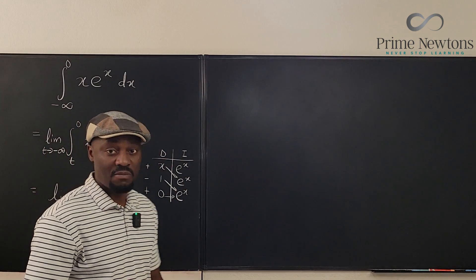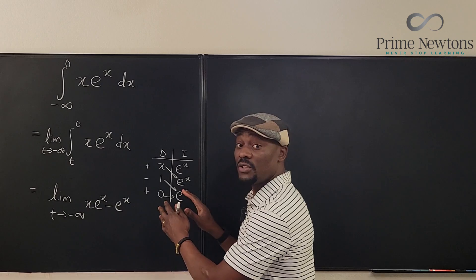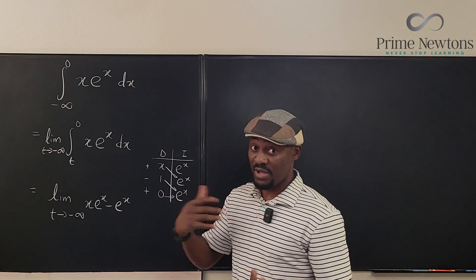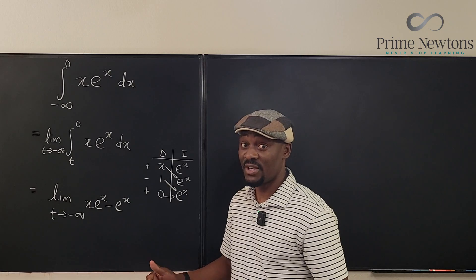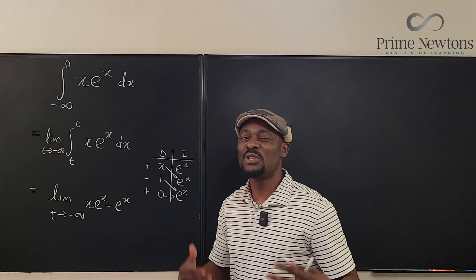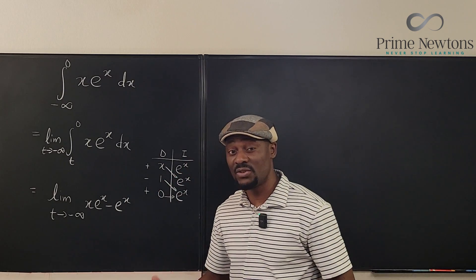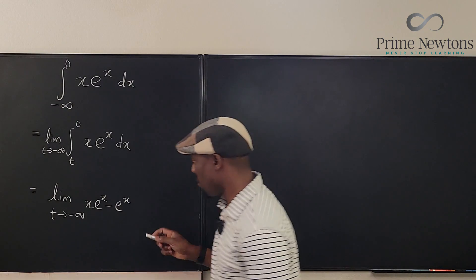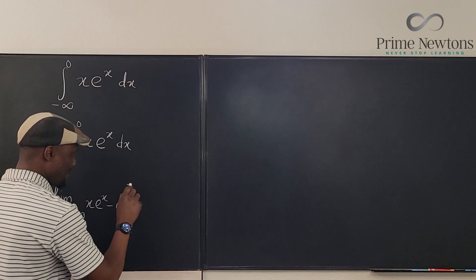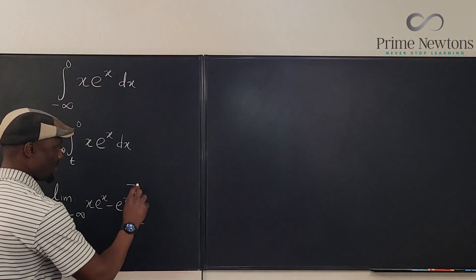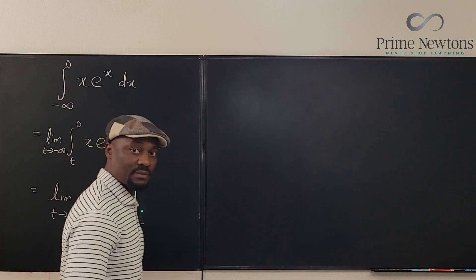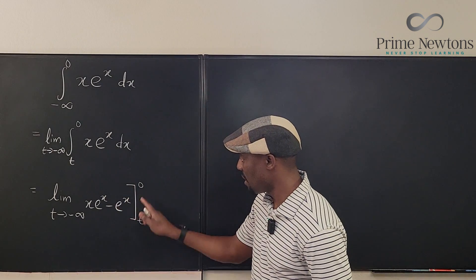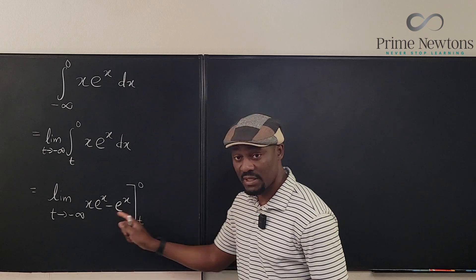This is integration by parts using the DI table. Now we have to evaluate this integral from t to 0. Evaluating from t to 0, I'm going to plug in 0 first and then plug in t, and I'll still take the limit.